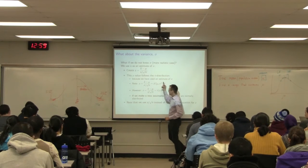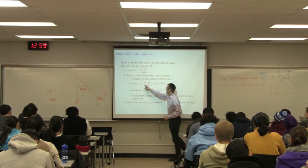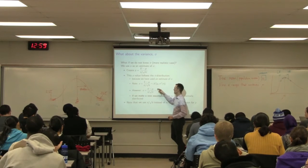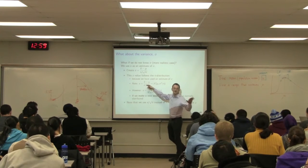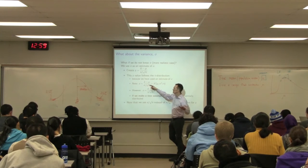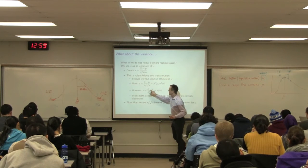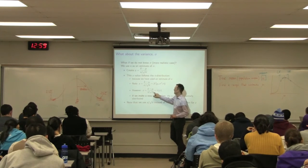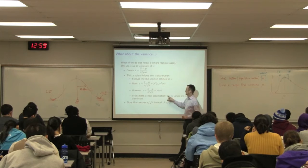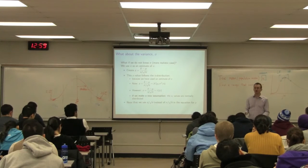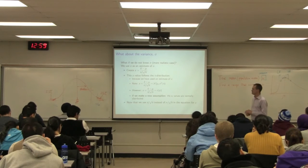If I know sigma, it's x-bar minus mu divided by sigma over root n that comes from the normal distribution. But if I don't know sigma — which is every case in practice — we resort to this second approach, and we must assume that x-i follows a normal distribution. You don't just assume it; you have to check it.